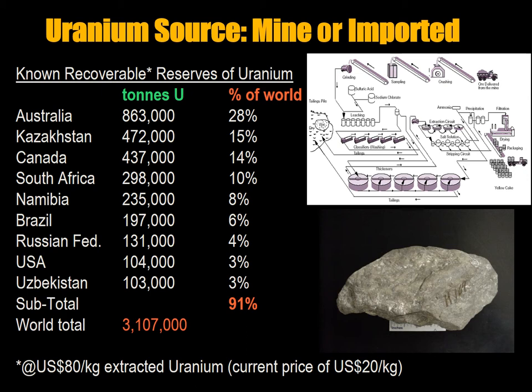The first step is to get resources for weapons-grade uranium and plutonium — you would start with a uranium deposit such as a mine or imported uranium. These are countries with known recoverable reserves of uranium. When we say recoverable, we mean you specify the amount of money you're willing to pay to extract a certain quantity and look for reserves that fit within that range. We're setting the value here at $80 US per kilogram for extracted uranium, whereas the current price is about $20 US per kilogram.